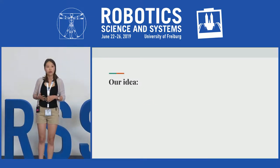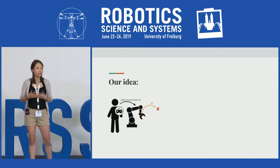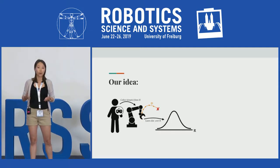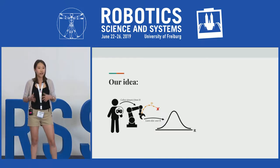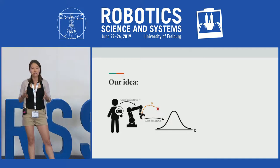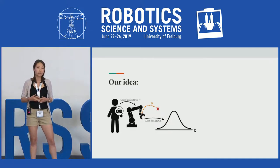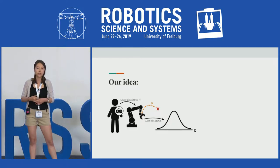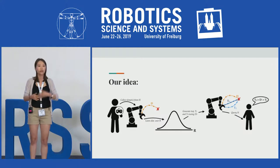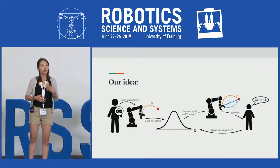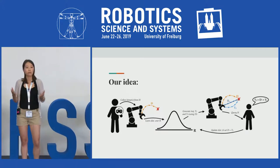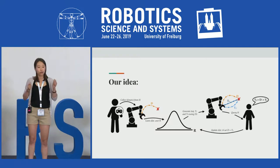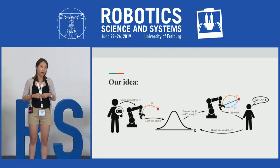Here's our idea. First, we collect demonstrations from humans, and from those demonstrations learn a distribution about reward functions — a prior. Although our prior may be imperfect, it effectively shrinks the space of possible reward functions. We can then use preference-based learning to learn a reward function in this much smaller space by repeatedly generating queries, getting feedback from humans, and updating our distribution, repeating until we converge on the true reward function. Since we're using preference-based learning in a much smaller space, far fewer queries are required.